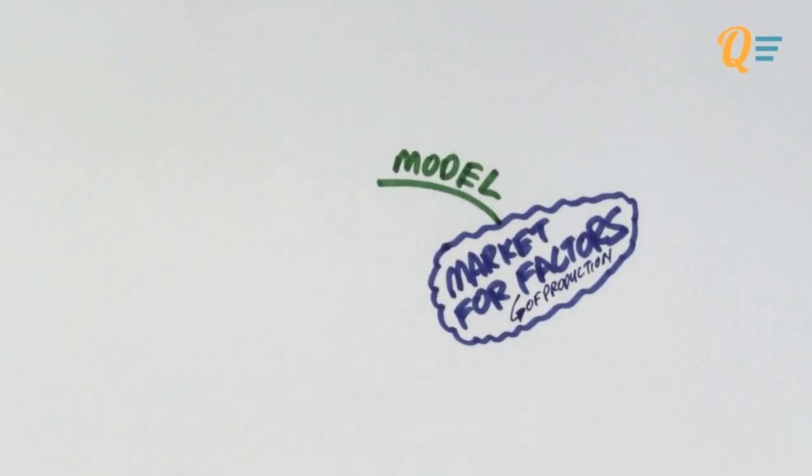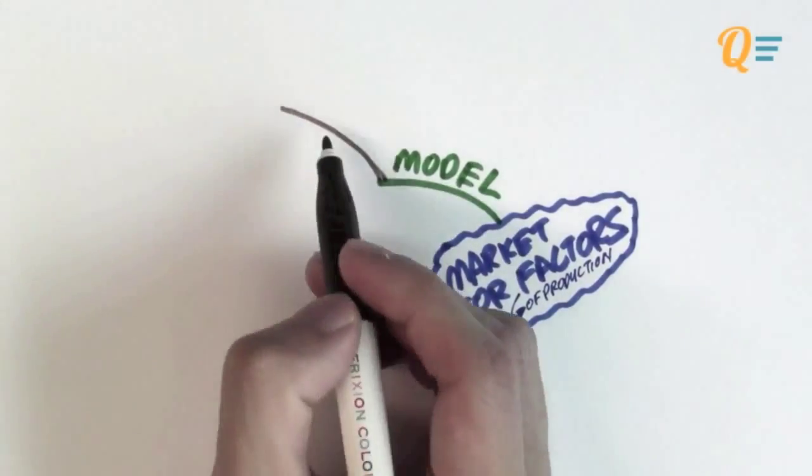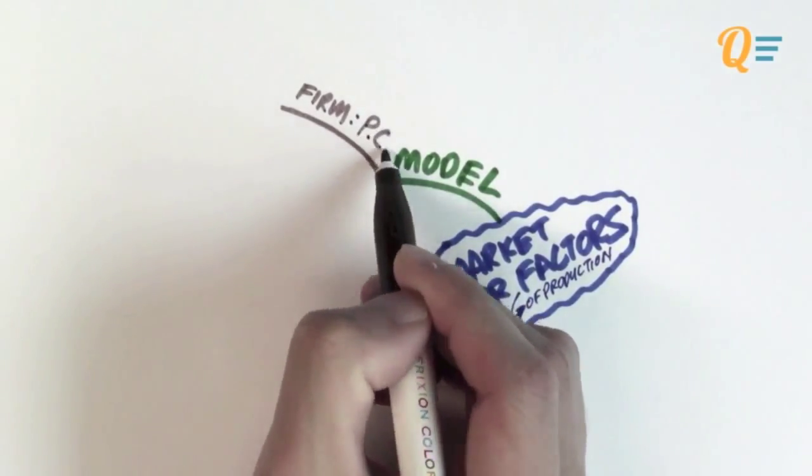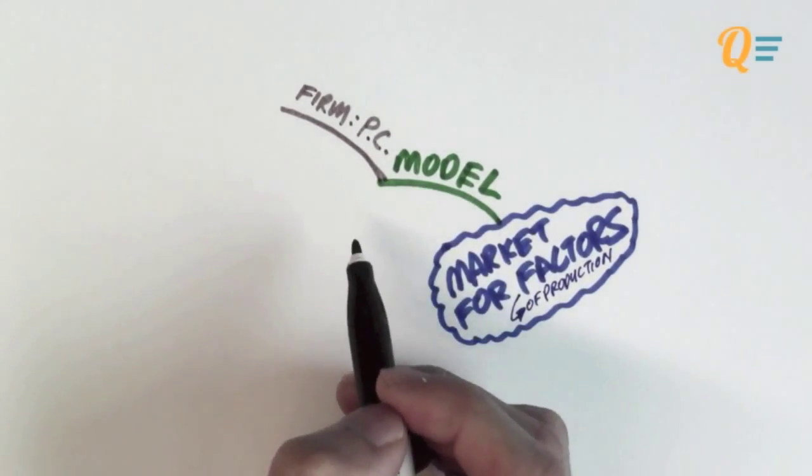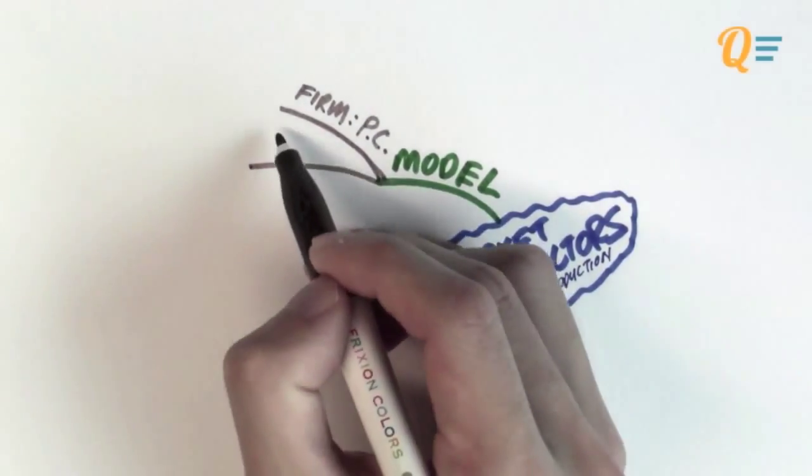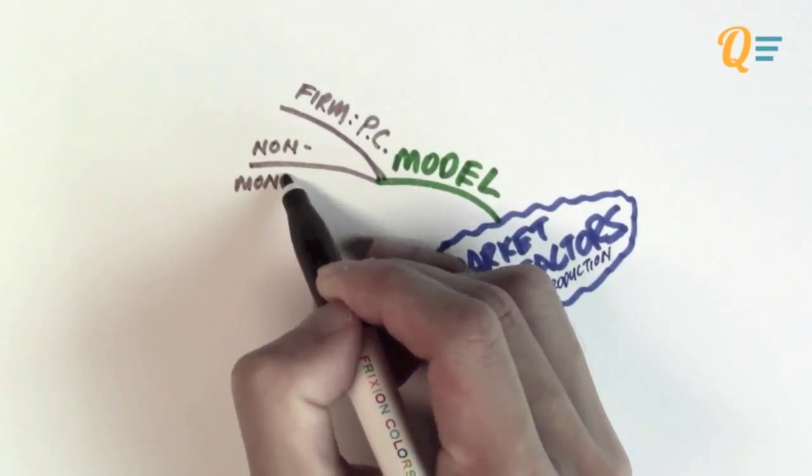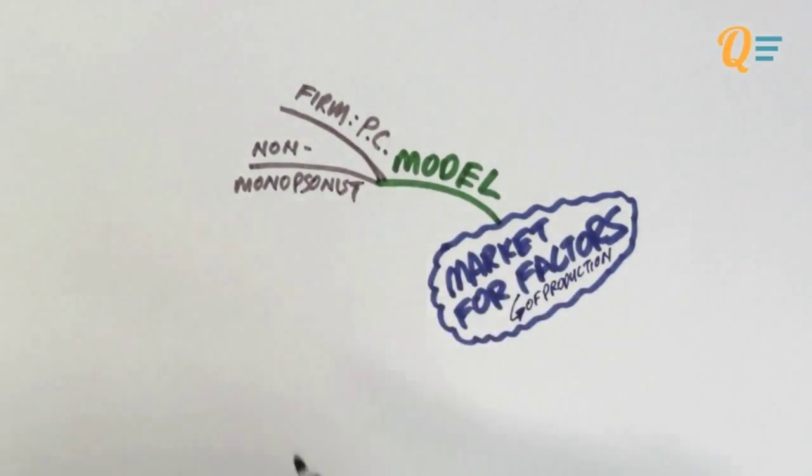I'm going to start with a very simple model to explain how the market for factor works. We're going to assume that firms are perfectly competitive and they are non-monopsonous.